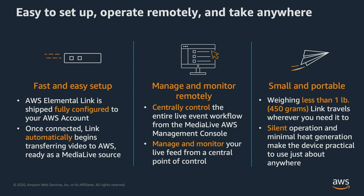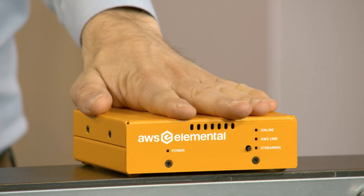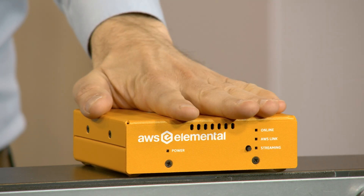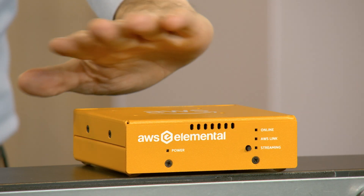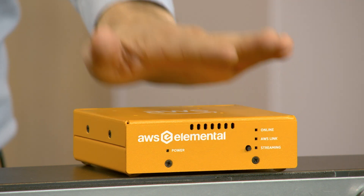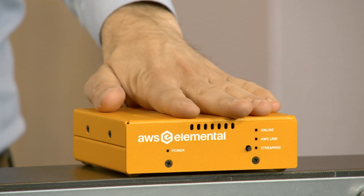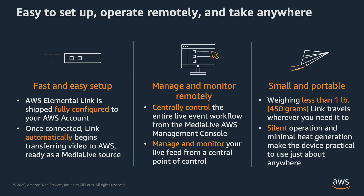The device is small and portable, less than a pound. Link travels wherever you need it to. It's silent in operation — less than 10 watts, creates no noise, and it's fanless. You can Velcro it to the side of a camera and no one would know the better.